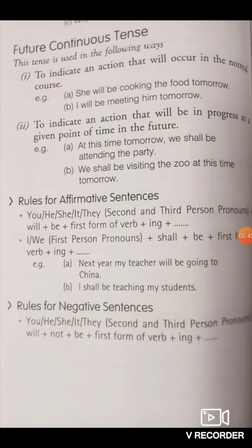Future continuous tense is used in the following ways. The first is to indicate an action that will occur in the normal course. Normal course means a habitual action or stating true facts. For example: 'I will be meeting him tomorrow' — that is a normal course of action, a normal routine. Another example: 'She will be cooking the food tomorrow.' This is a normal course of action which we all perform regularly.